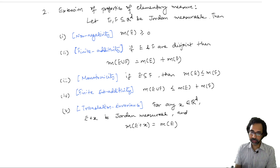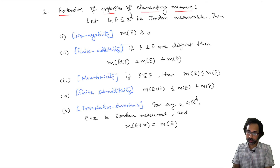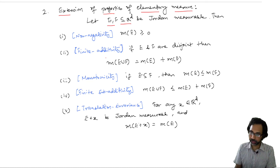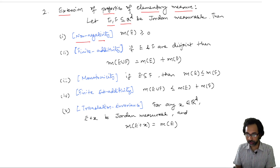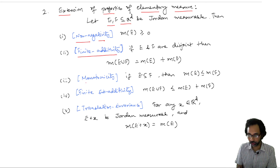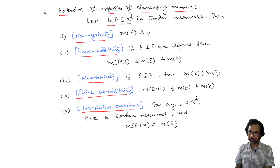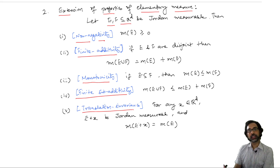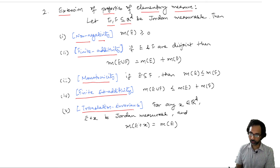The second part is the extension of the properties of elementary measure. Suppose E and F are Jordan measurable subsets of R^d; then we have non-negativity, finite additivity, monotonicity, finite subadditivity, and translation invariance. These properties, already proved for elementary measure, are inherited by Jordan measurable sets. Let me prove finite additivity.